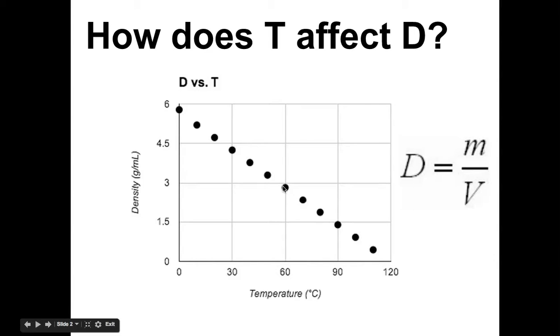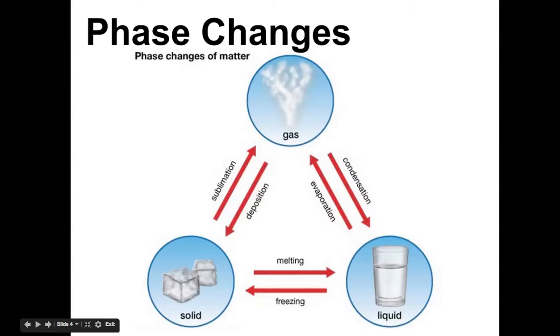So if we had a liquid, in lab we did an experiment where we found the density of air, and it was a really tiny number compared to liquids. That's because the volume increased so much on it, the volume is so much on that gas, that the density is really low. So that kind of brings us to our phase changes.